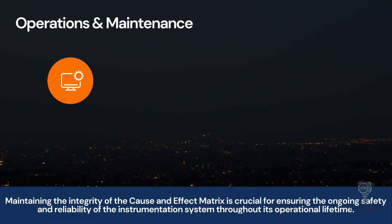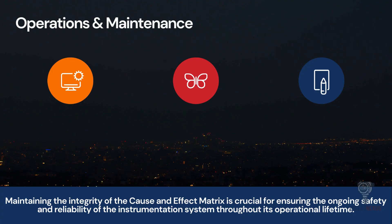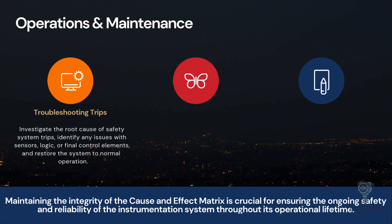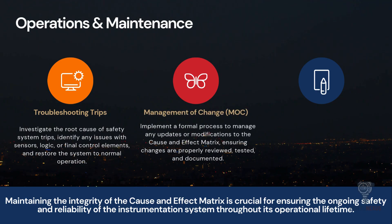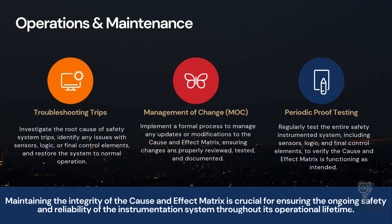After the plant is running, the cause and effect matrix enters the operations and maintenance phase. Operators use the matrix for troubleshooting trips — if the plant shuts down unexpectedly, they consult the matrix to trace the root cause and identify which sensor triggered the event. Crucially, we must implement management of change. If we need to change a trip setpoint, it must go through a formal review and documentation process. Finally, we perform periodic proof testing to regularly test the entire loop and ensure the system hasn't degraded over time and that the matrix is still functioning as intended.